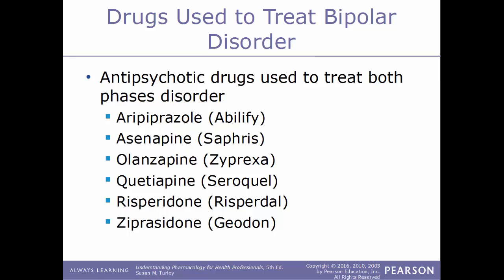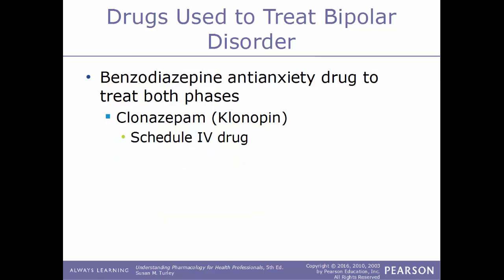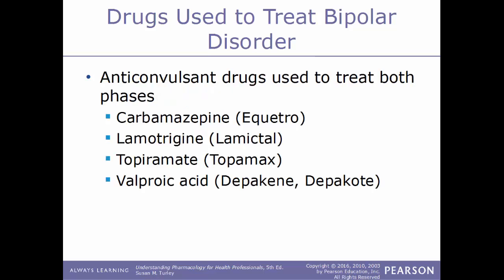Examples of antipsychotics used to treat both phases of bipolar disorder include aripiprazole (Abilify), asenapine (Saphris), olanzapine (Zyprexa), quetiapine (Seroquel), risperidone (Risperdal), and ziprasidone (Geodon). A benzodiazepine anti-anxiety drug used to treat both phases is clonazepam (Klonopin), a Schedule 4 drug. Anticonvulsants used to treat both phases include carbamazepine (Equetro), lamotrigine (Lamictal), topiramate (Topamax), and valproic acid (Depakote/Depakene).